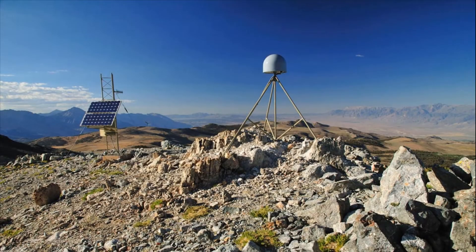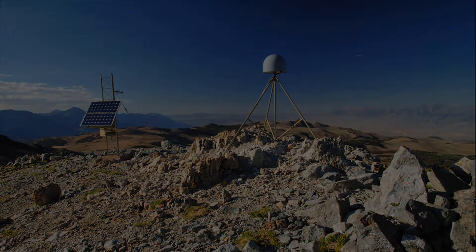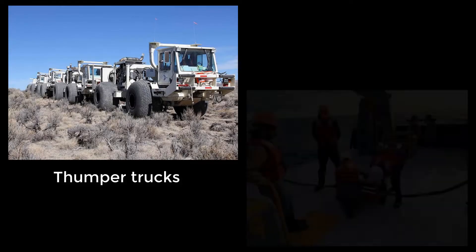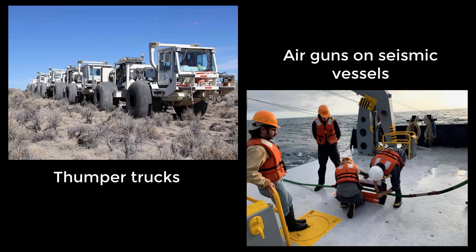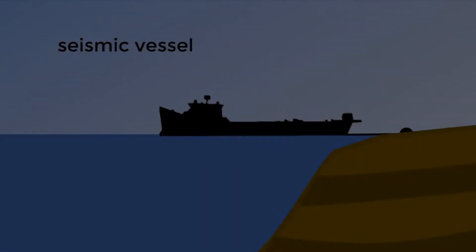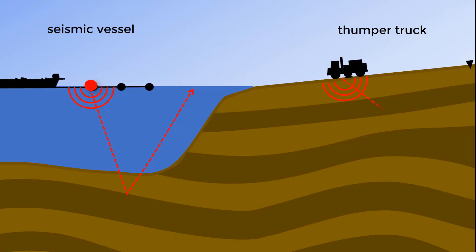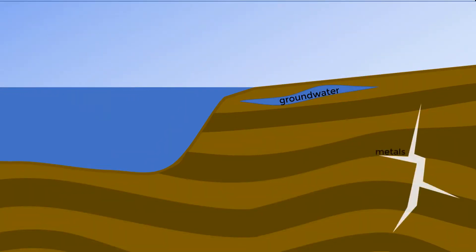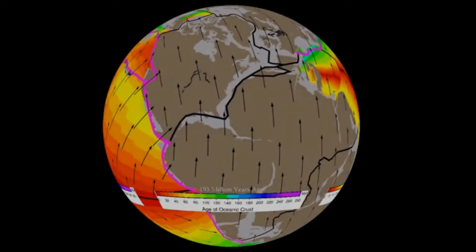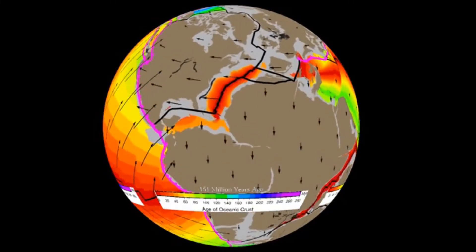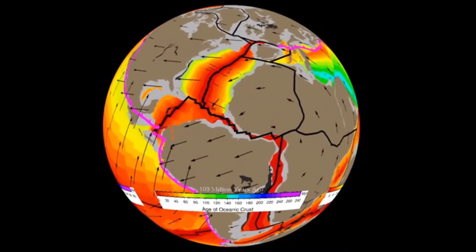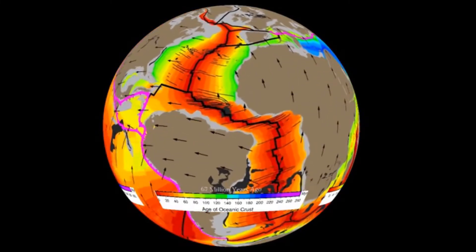Seismologists can work with human-generated seismic waves or controlled source explosions from specialized sources on land or compressed air at sea that send seismic pulses deep underground. They might collect these targeted data to explore for natural resources such as groundwater, minerals, oil, and natural gas. Alternatively, seismologists may use the data to research large-scale questions like how Earth's tectonic plates have evolved over their history.